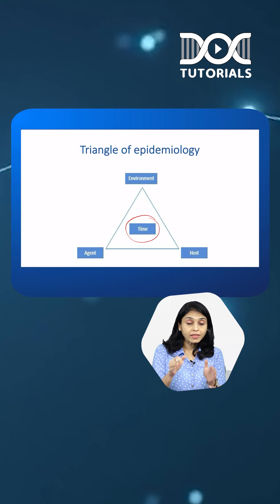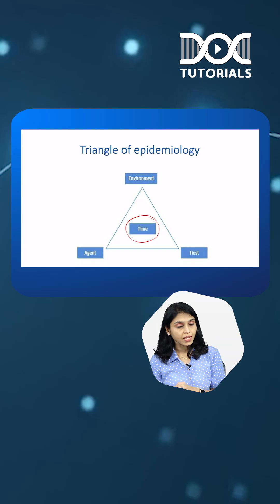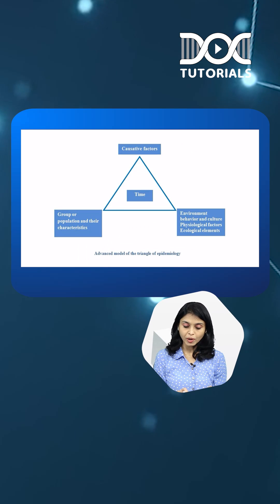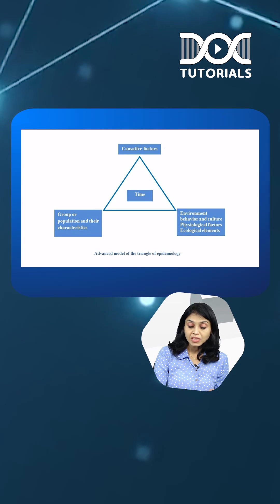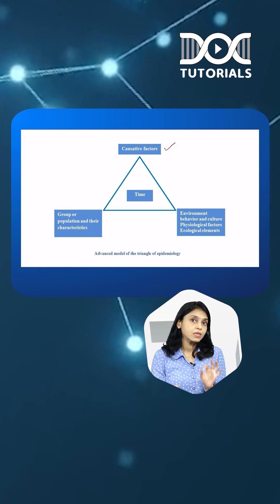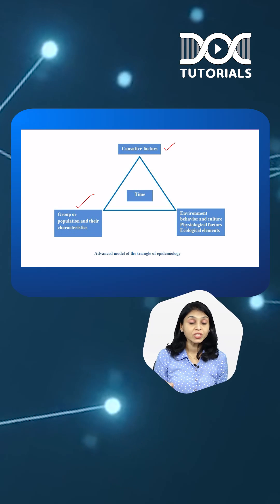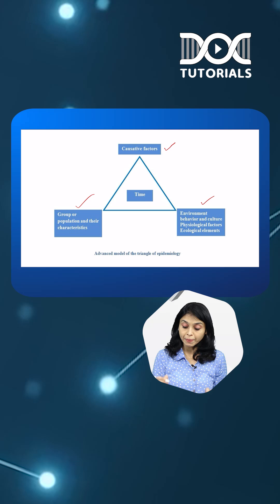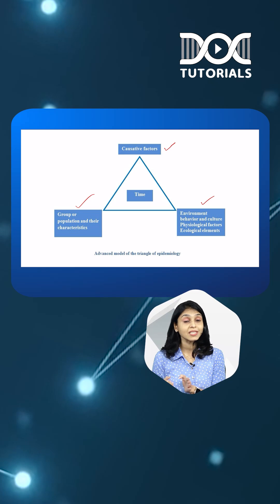And to accommodate this for non-communicable diseases, we have something known as advanced model of triangle of epidemiology where agent is replaced with causative factors, host is replaced with group or population and its characteristics, and the environment is replaced by environmental behavior, cultural, psychological factors, and others.